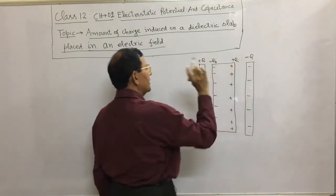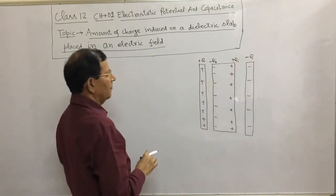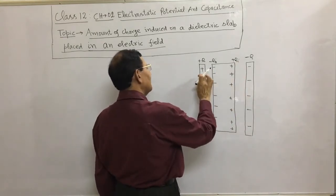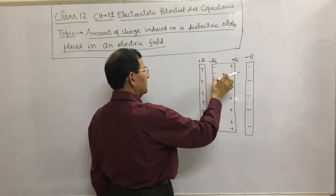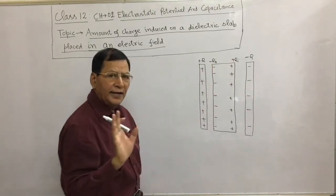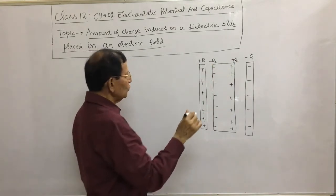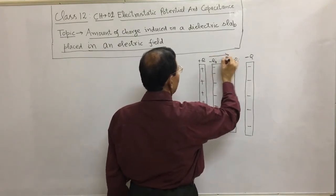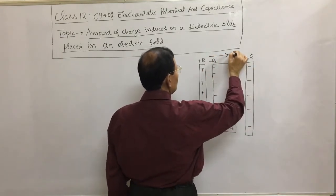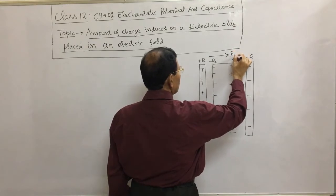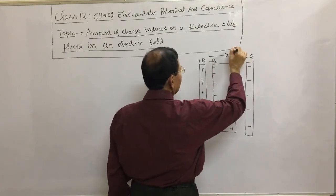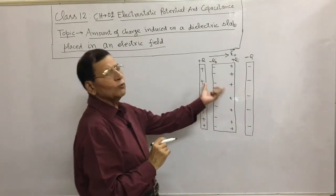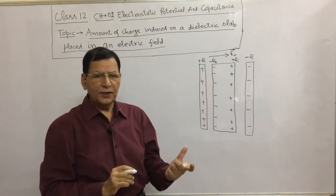When we did not keep the dielectric slab, the electric field was directed from the positive plate towards the negative plate. The field is uniform, except at the edges where there is a non-uniform effect. A parallel plate capacitor is a very good example of a uniform electric field.